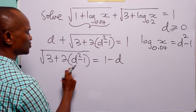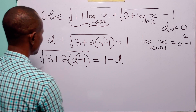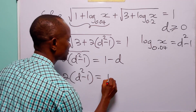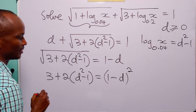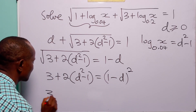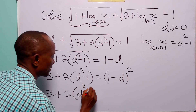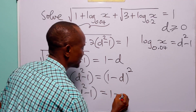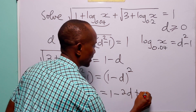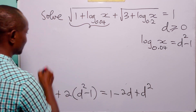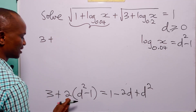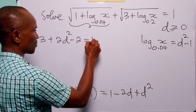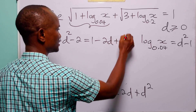Squaring both sides, we have 3 plus 2 times (d squared minus 1) equals (1 minus d) squared. Expanding the right side: 1 squared is 1, minus 2 times 1 times d is 2d, plus d squared. On the left: 3 plus 2d squared minus 2 equals 1 minus 2d plus d squared.